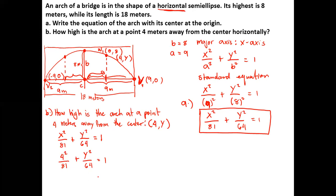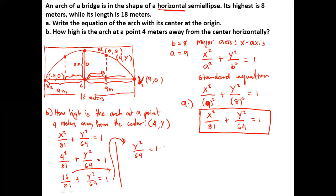Simplifying: 4 squared is 16, so we have 16/81 + y²/64 = 1. Transposing, y²/64 = 1 - 16/81. Computing 1 - 16/81 gives us 65/81. So y²/64 = 65/81.